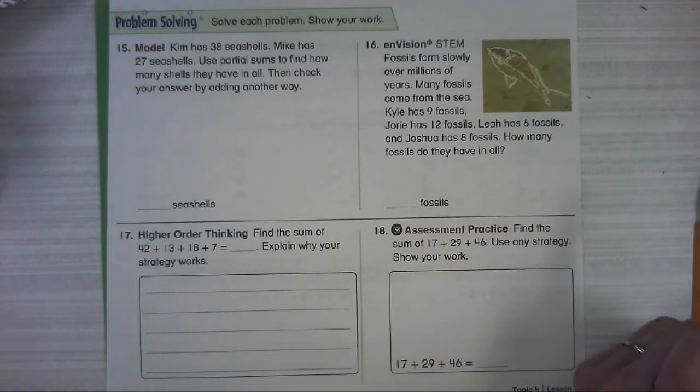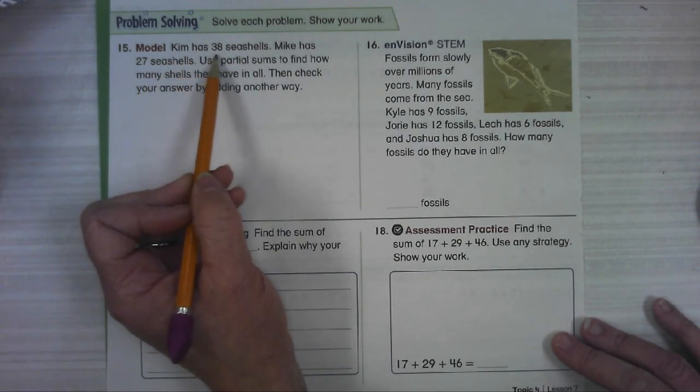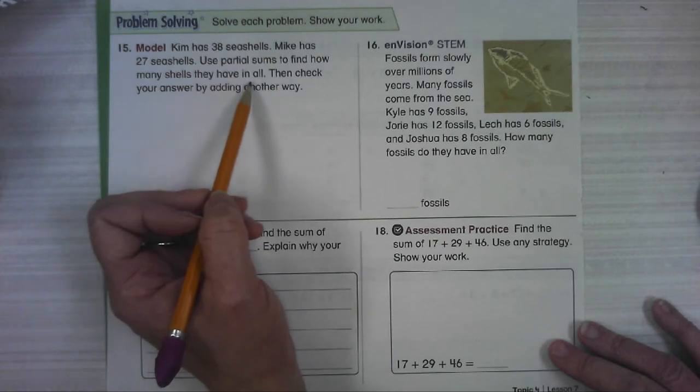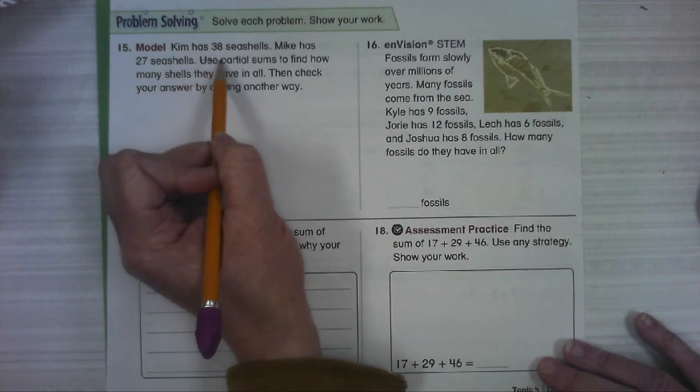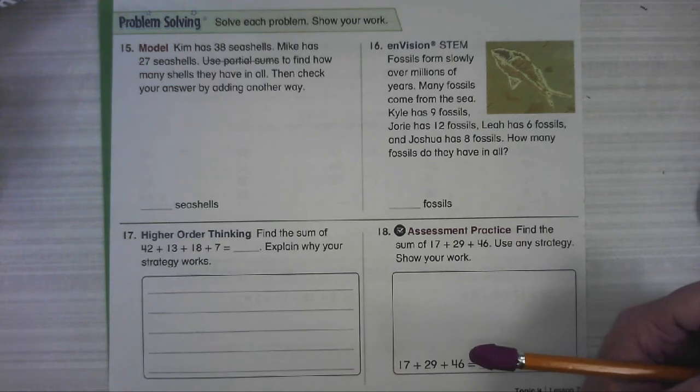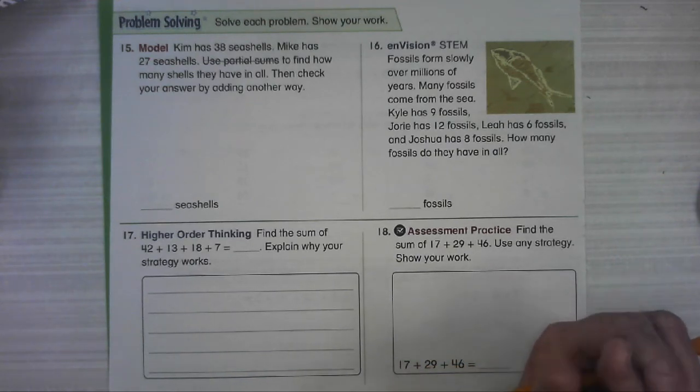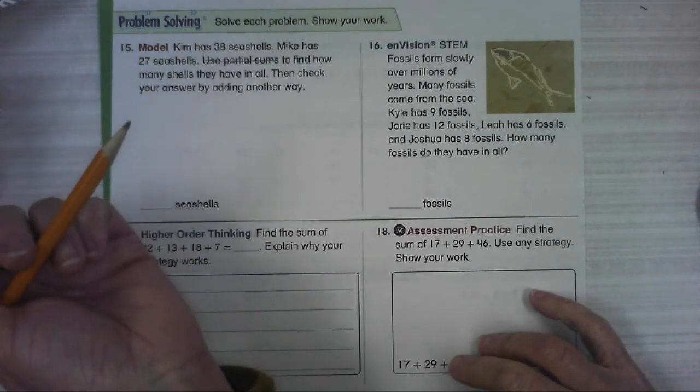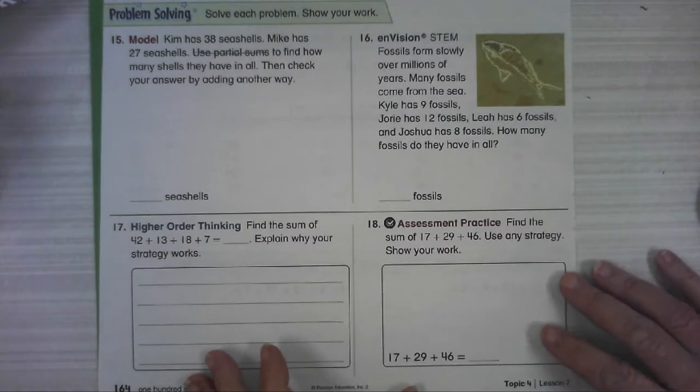Number 15 says we're going to solve our problems. We're going to show our work. This one specifically says model, which means draw a picture. Kim has 38 seashells. Mike has 27 seashells. Use partial sums to find how many seashells they have in all. Then check your answer by adding another way. It is not important to me that you use partial sums. You're going to try this doing two different ways. You can use any of the strategies that we've done. You can draw a picture of your base ten blocks, use a number line, expanded form. You're just going to try to show it two different ways. That's going to be the challenge of that one.